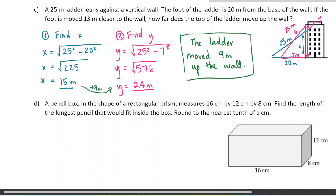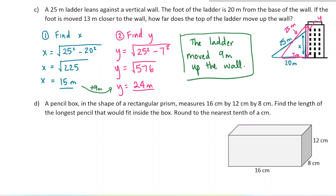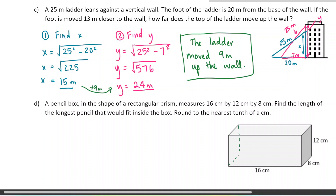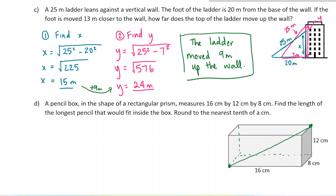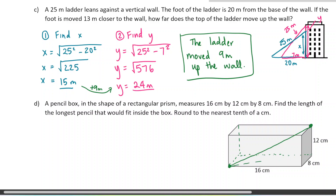The last question: a pencil box in the shape of a rectangular prism measures 16 by 12 by 8. Find the length of the longest pencil that would fit inside the box. The longest pencil would sit from one corner to the opposite corner diagonally. I'll make the box see-through so we can see inside. I'll call the diagonal along the bottom X and the final space diagonal Y.